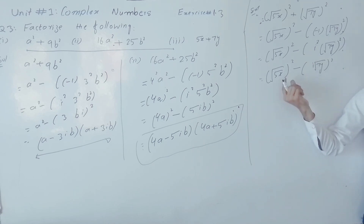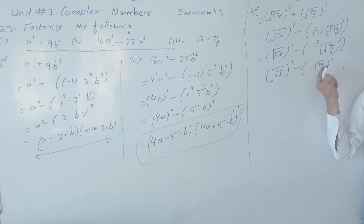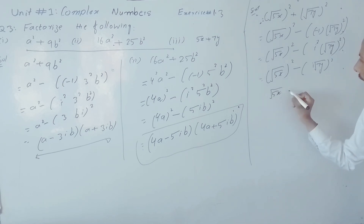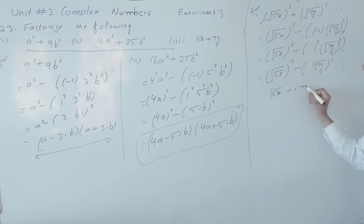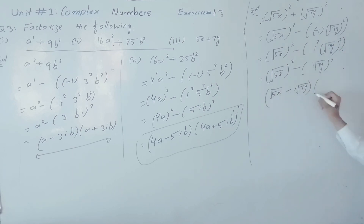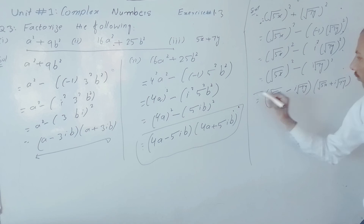(√5·x)² minus (√7·y·iota)² whole square can also be written in the form of (√5·x − iota·√7·y) into (√5·x + iota·√7·y), which is the required solution.